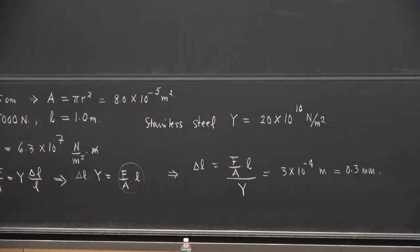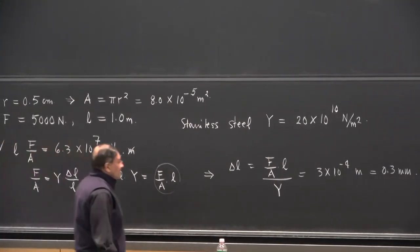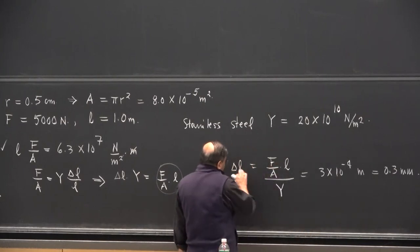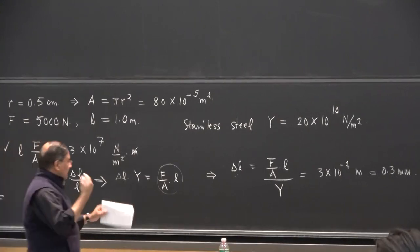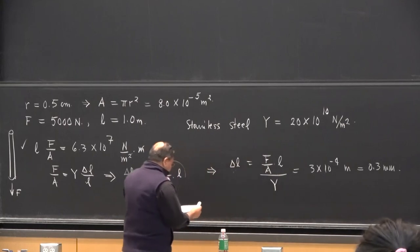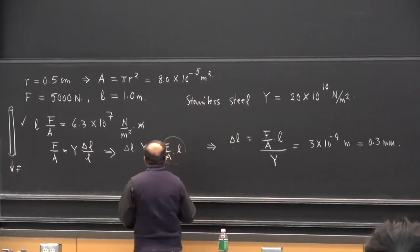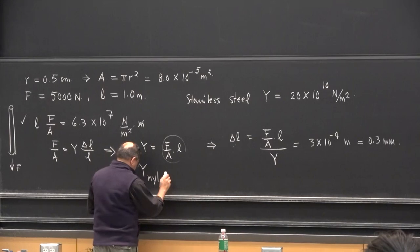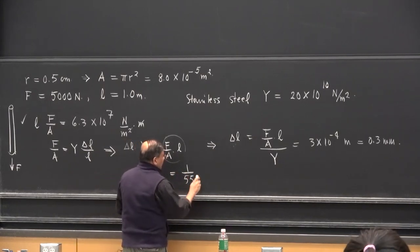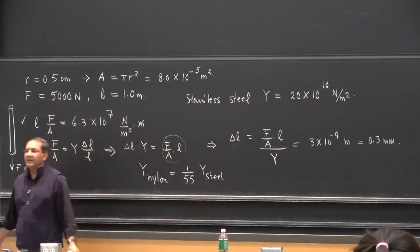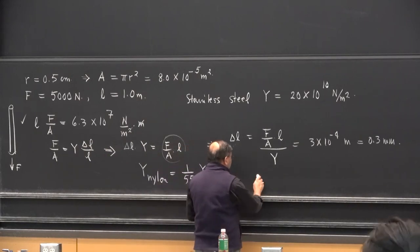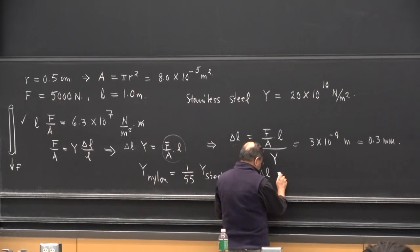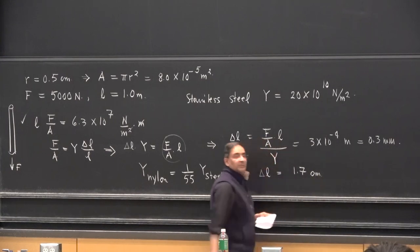So a 500 kilogram mass pulling on this wire would give you a stretch of about 0.3 millimeters — this is part of the reason why stainless steel is often used for making suspension bridges and things that carry heavy loads in crane parts and so on. For comparison, the Young's modulus for nylon is roughly 1/55 times Young's modulus for steel, and if you repeat this calculation for a nylon wire, the delta L comes out to 1.7 centimeters — much, much longer for the exact same numbers.